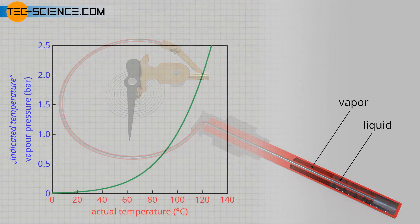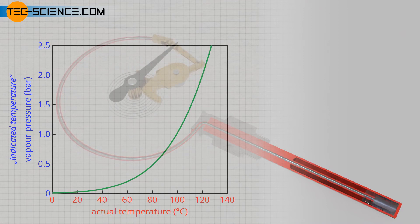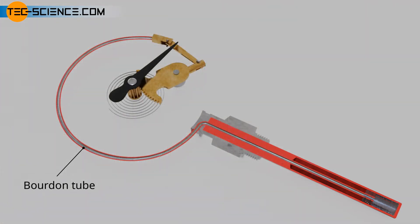The figure shows the vapor pressure curve of water as an example. If the temperature rises, more liquid will vaporize and the vapor pressure will rise accordingly. This rising vapor pressure is indicated by a Borden tube, as with gas-filled thermometers.